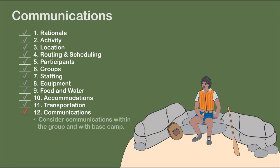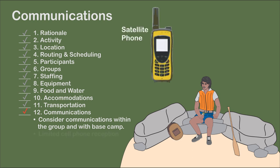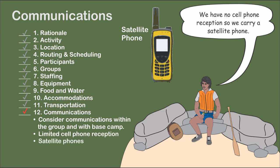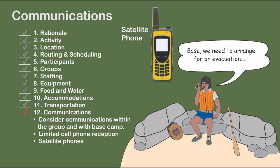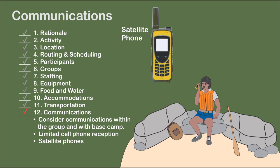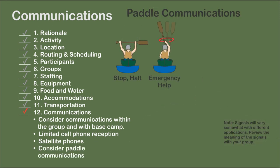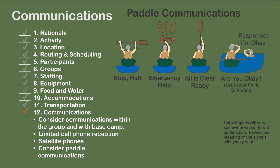There are communications with the group and with the base camp. Most wilderness areas do not have cell phone reception, so a satellite phone may be a good investment for communications with base camp. Using it discreetly and in seclusion can help maintain the remoteness of the wilderness experience. Consider using paddle communications within the group. Walkie-talkies are an option, but the batteries tend to wear down quickly. Also, if you need walkie-talkies, your group may be strung out along the trail more than it should be.